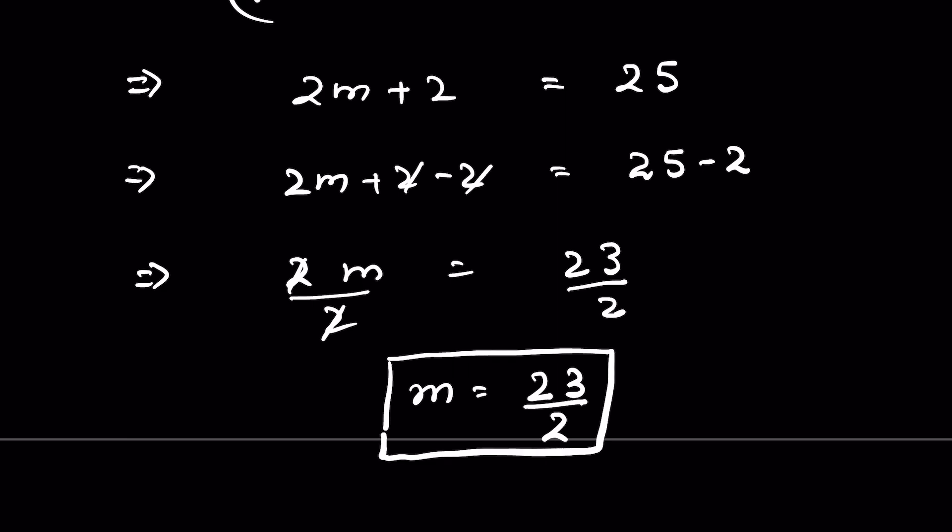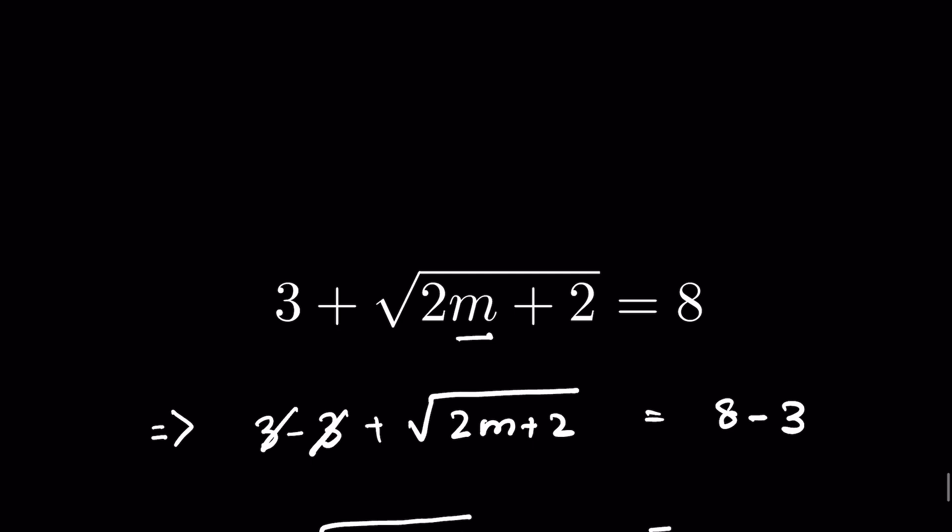We can verify this answer by substituting the value of m. So 3 plus 2 times 23 upon 2 plus 2 under square root equals 8. We have to check whether LHS equals RHS.